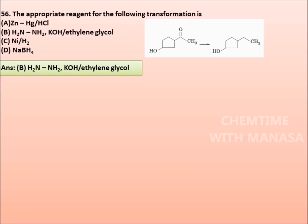But friends, whenever the reduction of a carbonyl compound in presence of OH is taking place, the Clemmensen reagent, zinc amalgam in hydrochloric acid, will convert the OH group into chloride group. So here, we can use Wolf-Kishner reduction because it has no effect on OH group. So option B, hydrazine and potassium hydroxide in ethylene glycol, will be the correct answer.